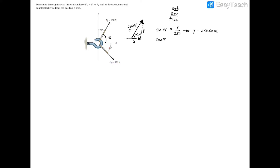For x, cosine(alpha) equals adjacent over hypotenuse, so x equals 250 cosine(alpha). Now substituting the numeric value of alpha: since the angle from x to y is 90 degrees and F1 is 30 degrees from the y-axis, alpha must equal 60 degrees. So x₁ = 250 cos(60°) and y₁ = 250 sin(60°). Make sure your calculator is in degrees, not radians.